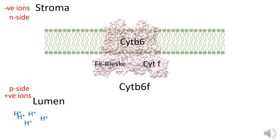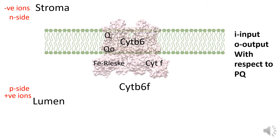The stromal side has fewer positive ions and is called the N-side (negative side), meaning there are more negative ions than positive ions. The P-side, facing the lumen, has more positive ions such as protons. Cytochrome b6 has two sites: a Qi site and a Qo site. The suffixes i and o stand for input and output with respect to plastoquinone — Qi is where PQ enters and interacts, and Qo is where PQ is released.